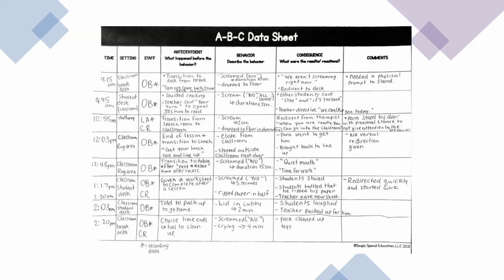Here's an example. Looking at the first line, the behavior is they screamed and dropped to the floor. You have the time, the setting — who took the data is also important. Before they screamed and dropped to the floor, they transitioned to the desk from a break, and they were given a prompt: 'Can we come back to our desk?' The consequence was feedback: 'We aren't screaming right now,' and then redirection. From ABC you can also get frequency — I can count how many screams occurred within the observation period.